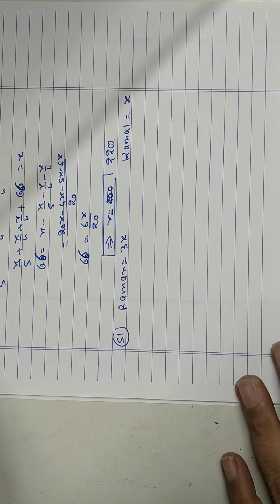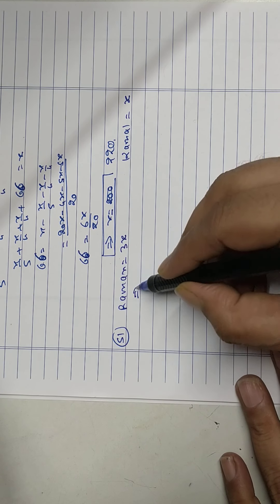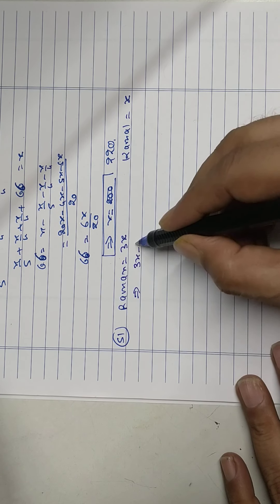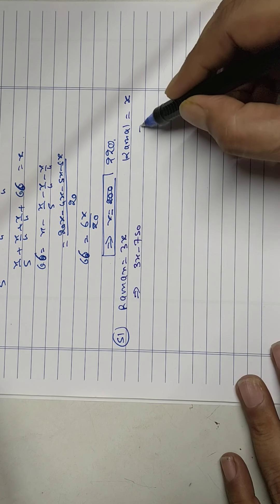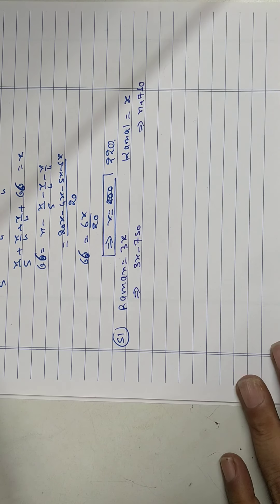Raman gives 750 to Kamal. So Raman will have now 3x minus 750 and Kamal will have x plus 750.